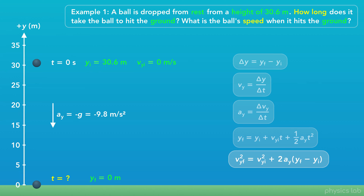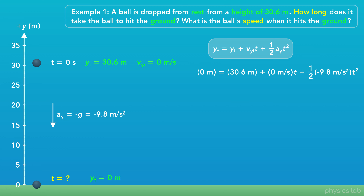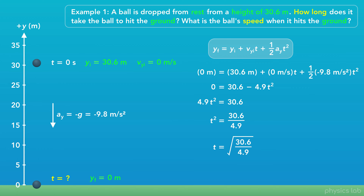The fifth equation relates initial and final velocities, acceleration, and positions, but doesn't include time. So let's use the fourth equation. We plug in 0 meters for the final position, 30.6 meters for the initial position, 0 meters per second for the initial velocity, and negative 9.8 meters per second squared for the acceleration. Simplifying, we add 4.9t² to both sides, divide by 4.9, and take the square root to find t equals 2.5 seconds.